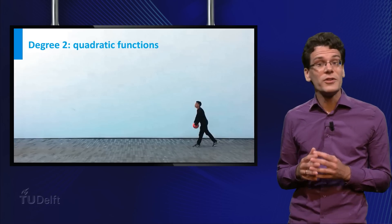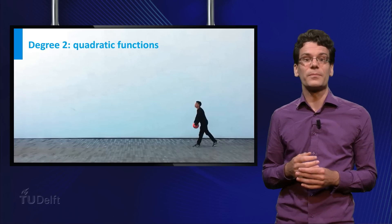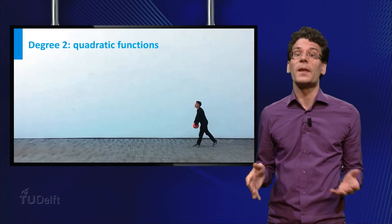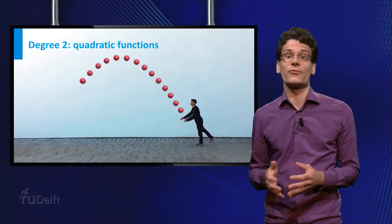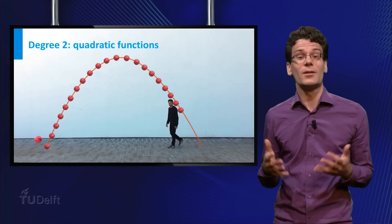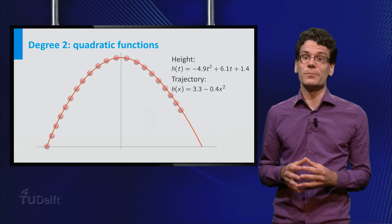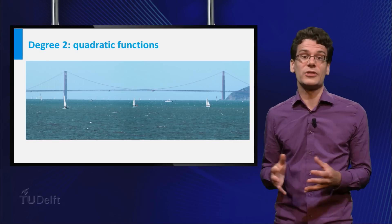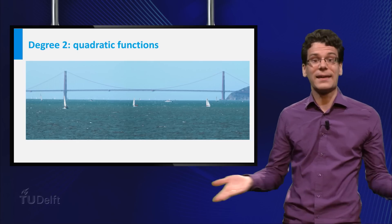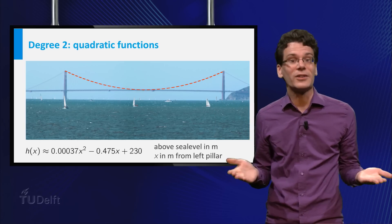Let's go one degree up to functions of degree 2. These functions are called quadratic functions. Quadratic functions also occur in many applications. For example, if you throw a ball, both the height as function of time and the trajectory of the ball can be well described by a quadratic function. A very different example is a suspension bridge, such as the Golden Gate Bridge in San Francisco. If the cables are much lighter than the deck they carry, the shape of the cables between the pillars can be approximated by a quadratic function.